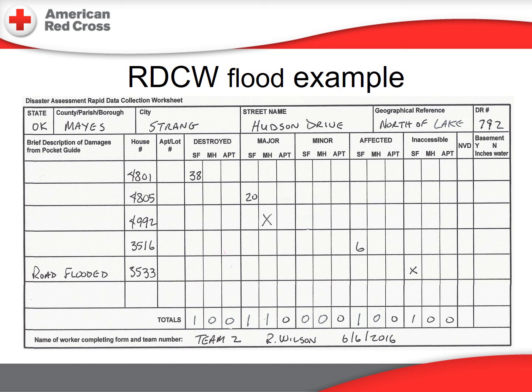The only time a description is required for a flooding event is when a home is marked as inaccessible. Please put a quick description of why the property is inaccessible as a result of the disaster itself. Total the bottom of each column to indicate the number of homes assessed for each damage category. Remember to include your team number, name, and date of assessment at the bottom of the form.